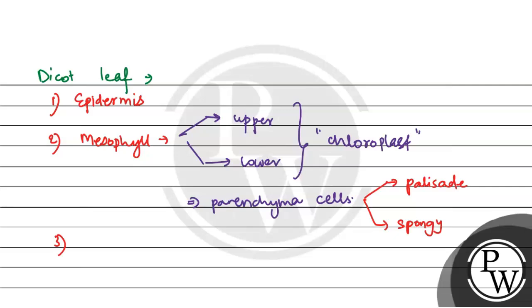Third is the vascular system. Vascular system has xylem and phloem. But in dicot leaves and stem, the parenchyma between the xylem and phloem is called the conjunctive tissue.